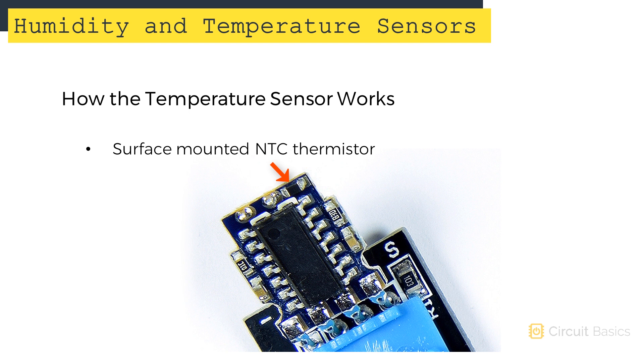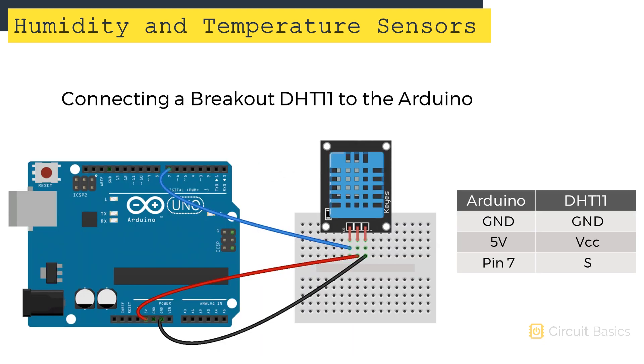The DHT11 measures temperature with a surface-mounted negative temperature coefficient thermistor, similar to the one we learned about in the last video. In the DHT11 though, the microcontroller reads the thermistor's resistance and calculates the temperature, so we don't have to. Okay, now let's see how to connect one of these to the Arduino.